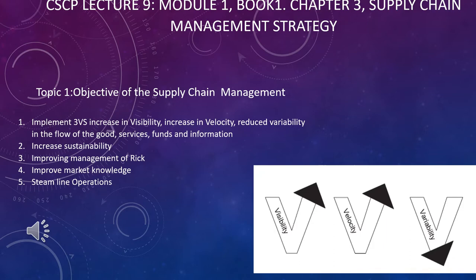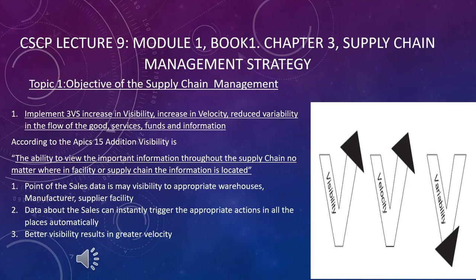Whenever you go into a company, keep in mind these five objectives of supply chain management: number one, implement the three V's — increase visibility, increase velocity, and reduce variability in the flow of goods, services, funds, and information. The second objective is increase sustainability; third, improve management of risk; fourth, improve market knowledge; and fifth, streamline operations.